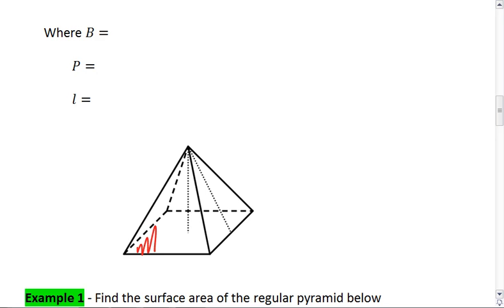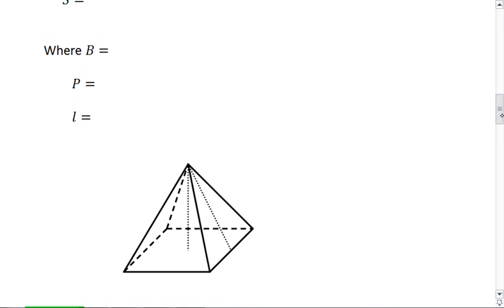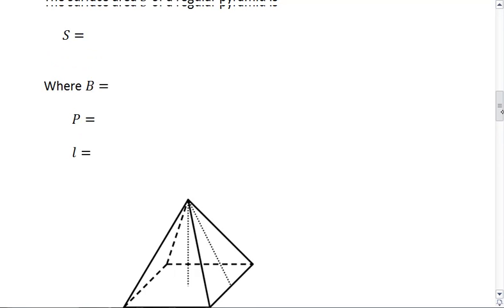So in the example we have down here, our base is a square. You can have a regular triangular pyramid, you can have a regular square pyramid, regular pentagonal pyramid. It just tells you that your base has equilateral, so congruent sides, and equiangular, congruent angles.